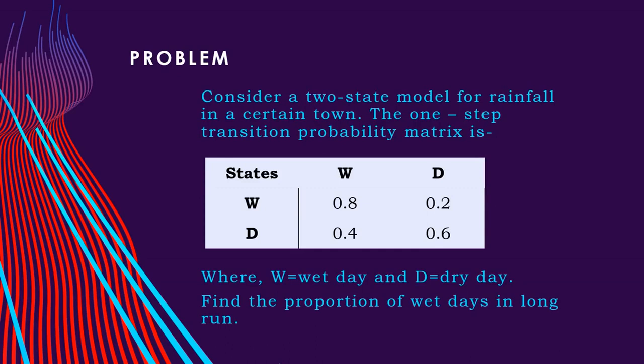If today is a wet day, then tomorrow will also be a wet day with probability 0.8. If today is wet day, then tomorrow will be a dry day with probability 0.2. If today is a dry day, then tomorrow will be a wet day with probability 0.4. Also if today is a dry day, tomorrow will be a dry day with probability 0.6.